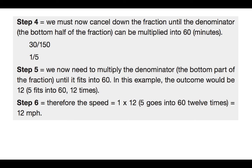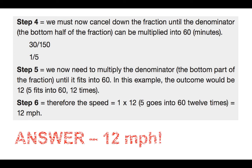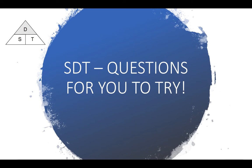We now need to multiply the denominator, the bottom part of the fraction, until it fits into 60. And in this example, the outcome would be 12. 5 fits into 60 12 times. Therefore, the speed equals 12 miles per hour. Now, as I say, you should be able to answer this relatively quickly in your head, and you will as you go along, but some of them will be more complex.